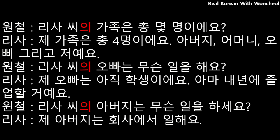리사 씨의 가족은 총 몇 명이에요? (How many people are in Lisa's family?) 제 가족은 총 4명이에요. 아버지, 어머니, 오빠 그리고 저예요. (There are 4 people: father, mother, older brother, and me.) 리사 씨의 오빠는 무슨 일을 해요? 제 오빠는 아직 학생이에요. 아마 내년에 졸업할 거예요. (What does your brother do? He's still a student. He'll probably graduate next year.)